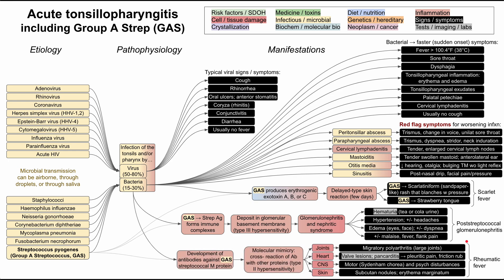The last major complication worth knowing is rheumatic fever. Here the body develops antibodies against group A strep's M protein, but molecular mimicry causes a cross-reaction of those antibodies with other proteins in the patient's own body — this is type 2 hypersensitivity. These proteins are in various tissues, most notably the heart and neural tissue. In the heart, myosins are the proteins affected, leading to valvular lesions that manifest as heart murmurs and sometimes shortness of breath. You can also have pancarditis affecting all three layers — endocarditis, myocarditis, and pericarditis. Pericarditis presents as pleuritic chest pain, worse with breathing, and a friction rub on exam.